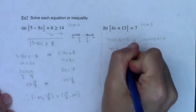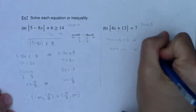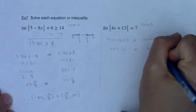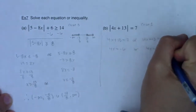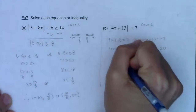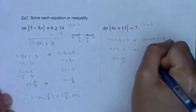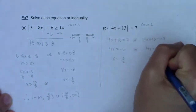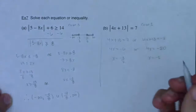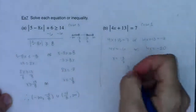Solving these two linear equations: 4x equals negative 6, giving x equals negative 3/2; or 4x equals negative 20, giving x equals negative 5. Those are my two answers.